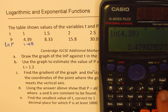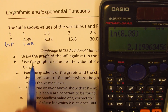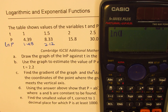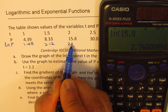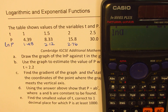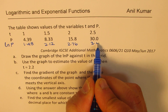ln(8.33) equals 2.119, so I'll write 2.12. Then ln(15.8) equals 2.76 — 2.76 is good enough. And ln(30.0) equals 3.401, so 3.4 is good enough.